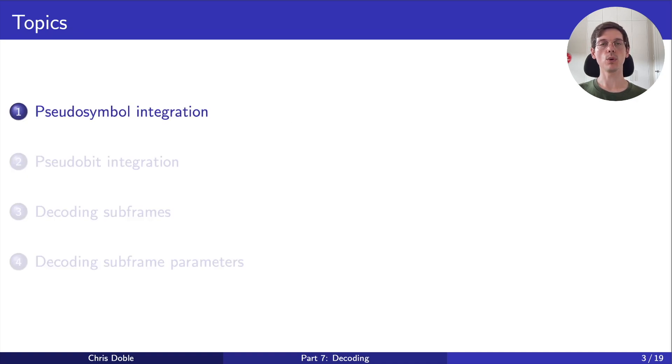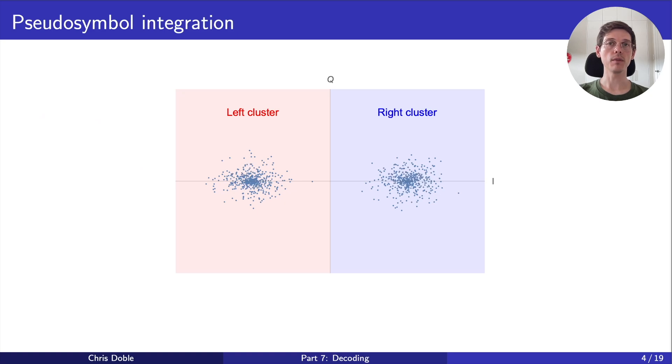Let's start by talking about how we group pseudo-symbols into pseudo-bits, a process called pseudo-symbol integration. A pseudo-symbol is associated with one of the two correlation clusters. In my implementation, those associated with the left, or negative cluster, have a value of negative 1, while those associated with the right, or positive cluster, have a value of positive 1.